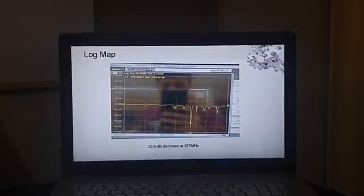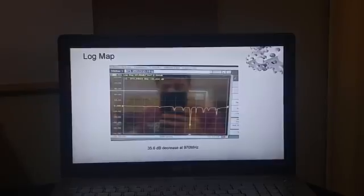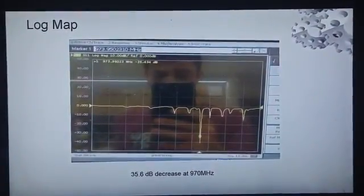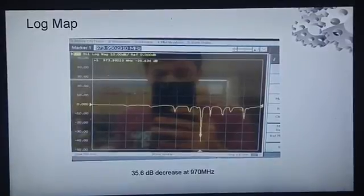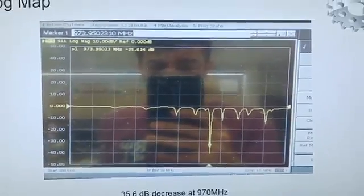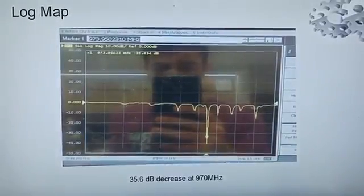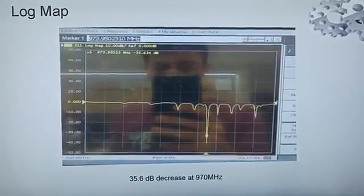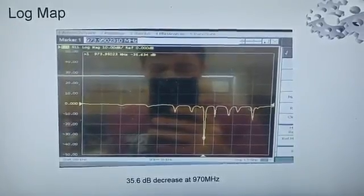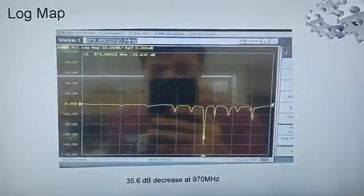Then I measured its log map on network analyzer. You can see the log map. You can see there is 35.6 dB decrease at 970 MHz, which is the resonance frequency. There are also small fluctuations at different frequencies. The reason behind it may be that the inside of the resonator is not so smooth.